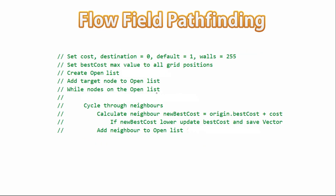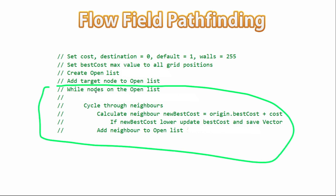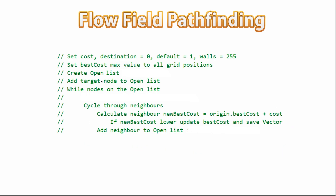So this is the data that the algorithm needs on each grid node: the cost, the best cost, and the vector. Then the logic for the algorithm itself. The first thing we do is set up the grid — we go through all the grid positions and set them up: the destination cost to 0, default to 1, and walls at 255. That prepares the grid. We're also going to set up the best cost, defaulting it to the max value — later on the algorithm chooses the lowest one, so this defaults it to the highest possible. Then the algorithm has an open list, which contains all the nodes currently queued up for searching. The way the algorithm works is basically a loop that runs for as long as we have nodes on the open list. To kick off the algorithm we add the target node to the open list as the start, then we do our while loop and grab the first one on the open list, then grab all the neighbors of this node.